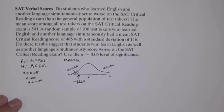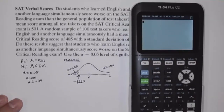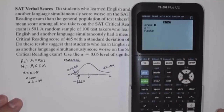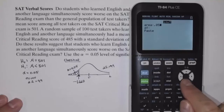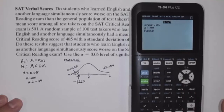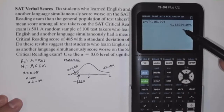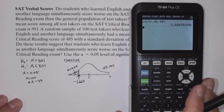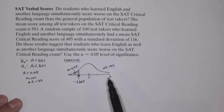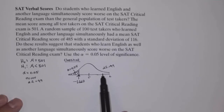Just for verification, if I use the inverse t command on my calculator with the area in the left tail of 0.05 and 99 degrees of freedom, I get the same value: negative 1.660. So having to use 100 degrees of freedom instead of 99 from the table isn't really a problem.